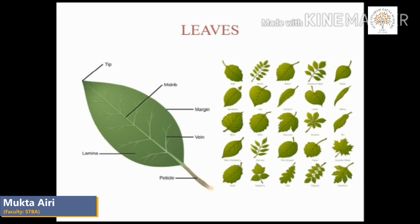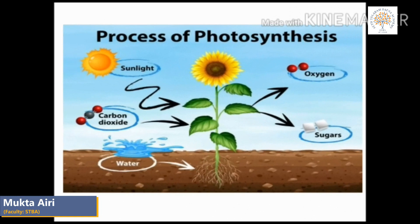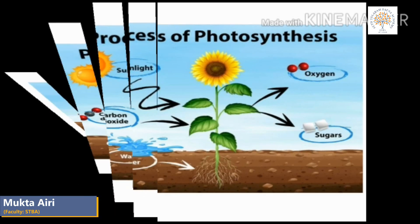Leaves carry out the process of photosynthesis. Photosynthesis is the process in which plants use carbon dioxide and water in the presence of sunlight and chlorophyll to prepare food and release oxygen and sugar. Leaves are considered the food factory or kitchen of a plant. The food prepared by the leaf is stored in the form of starch.